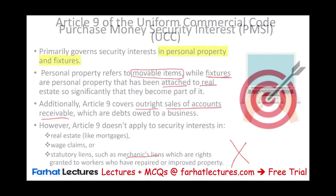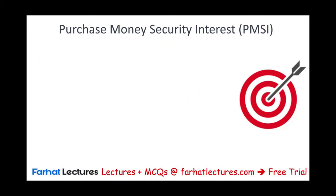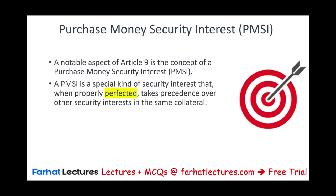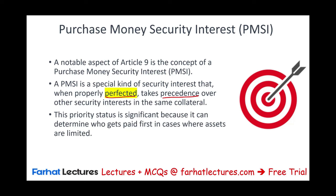Let's discuss Purchase Money Security Interests, or PMSI, which is an aspect of Article 9. A PMSI is a special kind of security that, when properly perfected, takes precedence over other security interests in the same collateral. This priority status is significant because it determines who gets paid first when assets are limited and there are multiple creditors. If you have a PMSI in an asset that is properly perfected, it takes precedence.